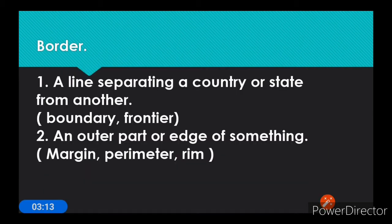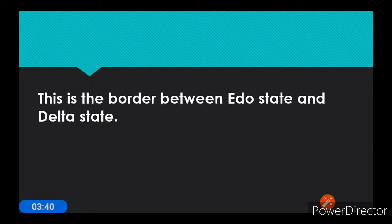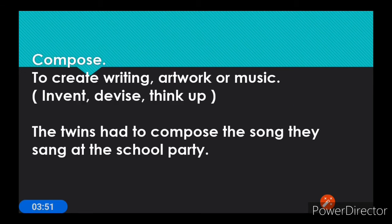Now let's move on to the next word: 'border.' It has two meanings. The first is a line separating a country or state from another. The synonyms are boundary and frontier. The second meaning is an outer part or edge of something, and the synonyms are margin, perimeter, and rim. Sentence: 'This is the border between Anambra State and Delta State' — a line separating the two states.